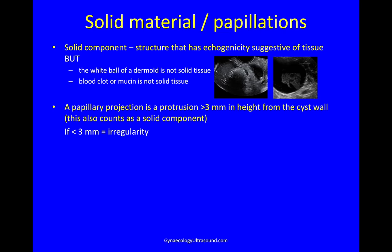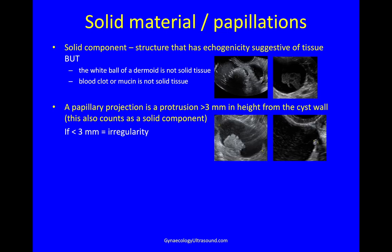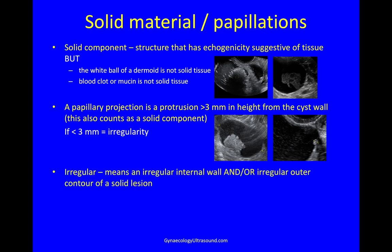A papillary projection is a protrusion more than three millimetres in height from the cyst wall — at that point it is a solid component. It's also a papillation if it protrudes into the cyst with fluid on three sides. If it's less than three millimetres in height it counts as an irregularity.